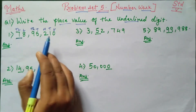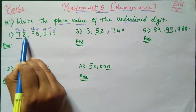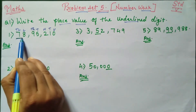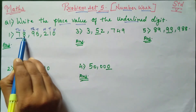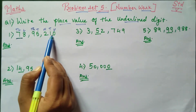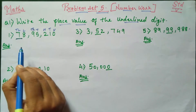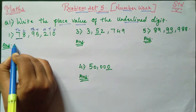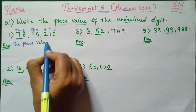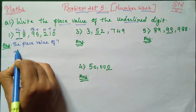The second way is very simple. From where the number is underlined, count the numbers from there, and add that many zeros. Here 7 is underlined, so from there we count 1, 2, 3, 4, 5, 6 — we add 6 zeros after 7. So the answer is 70 lakhs. Therefore, the place value of 7 is 70 lakhs, that is 70,00,000.